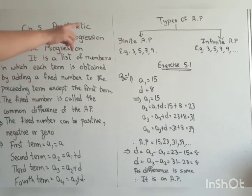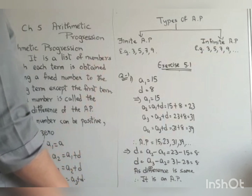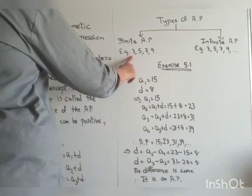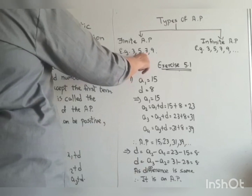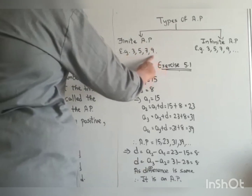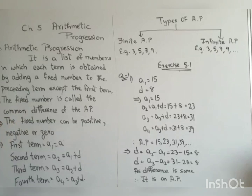There are two types of A.P.: finite A.P. and infinite A.P. For example, if first term is 3 and common difference is 2, the sequence is 3, 5, 7, 9 — it ends, so it is a finite A.P. If I say all the natural numbers, it goes on and on, so that is an infinite A.P.